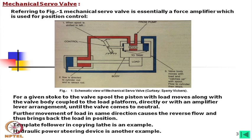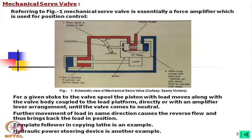Template follower in a copying lathe is one example. Hydraulic power steering is another: a small steering effort is magnified, and the steering wheel may rotate 90 degrees while the road wheels rotate only 15 degrees. Such magnification and following can be achieved by a hydro-mechanical servo valve.